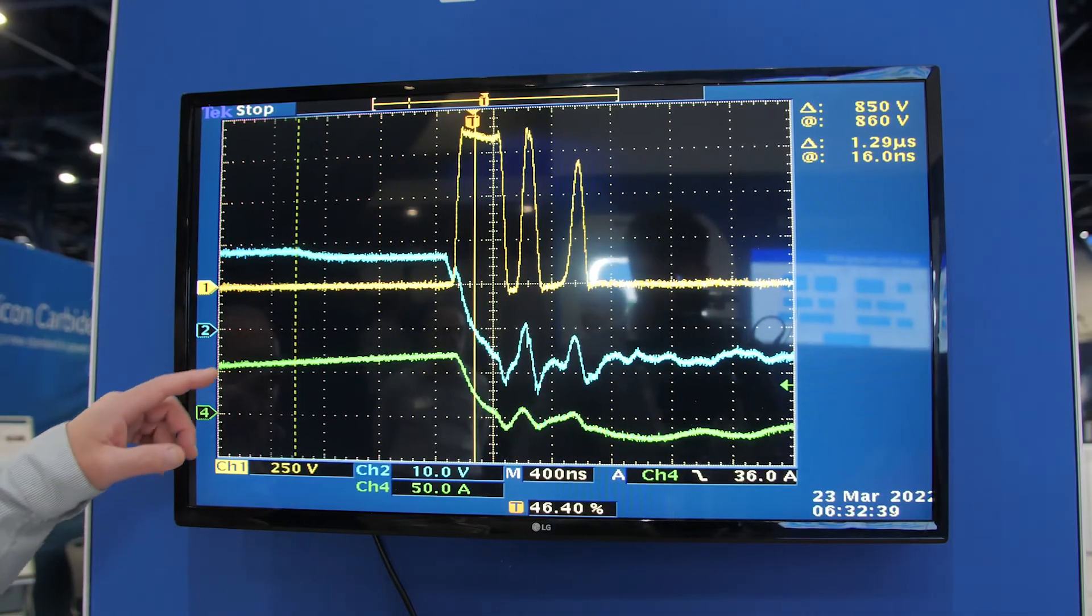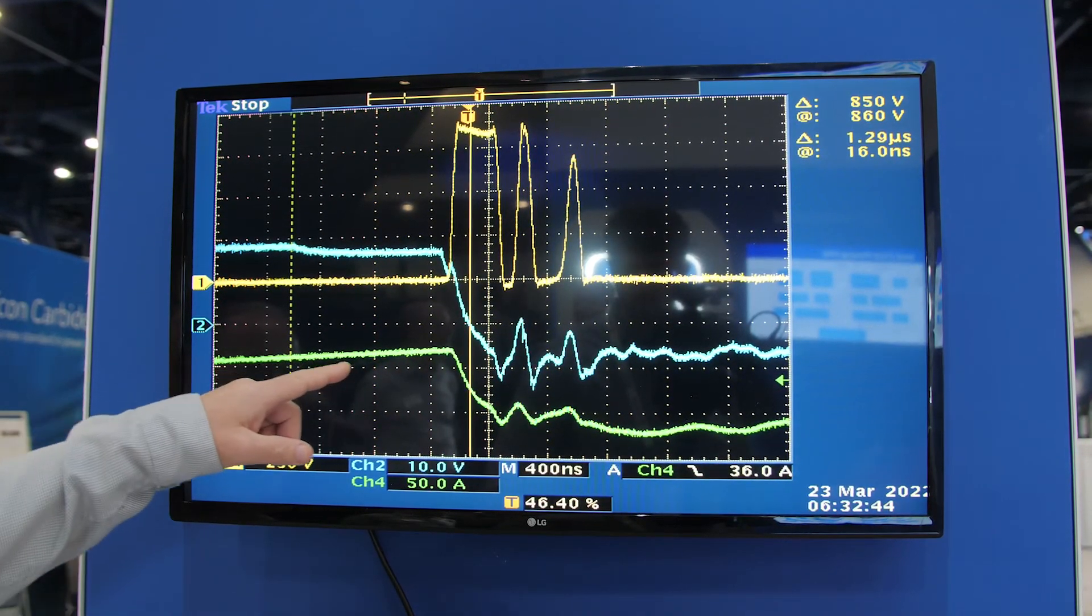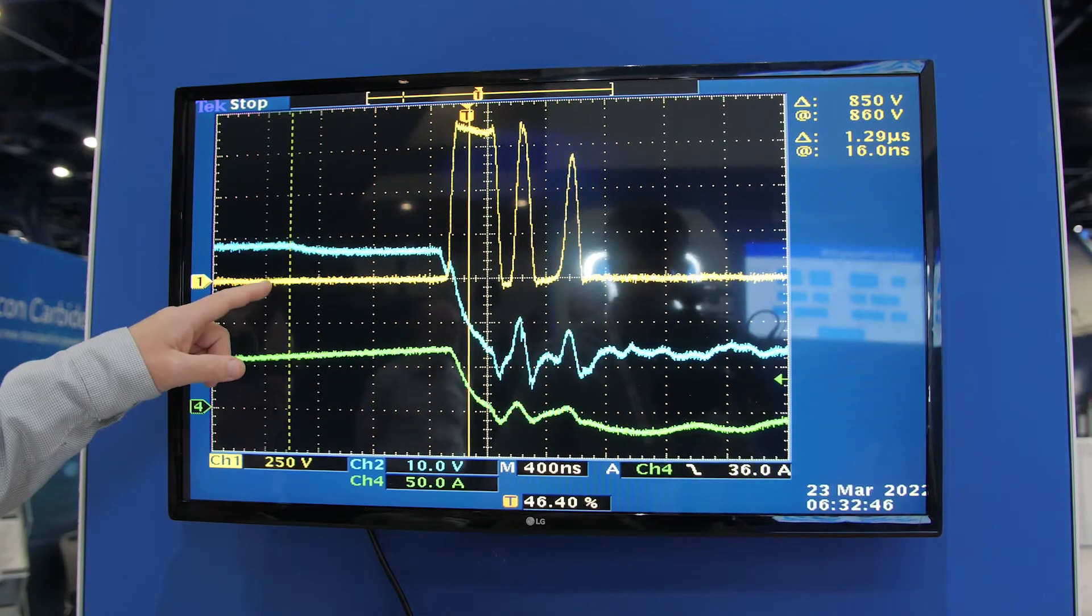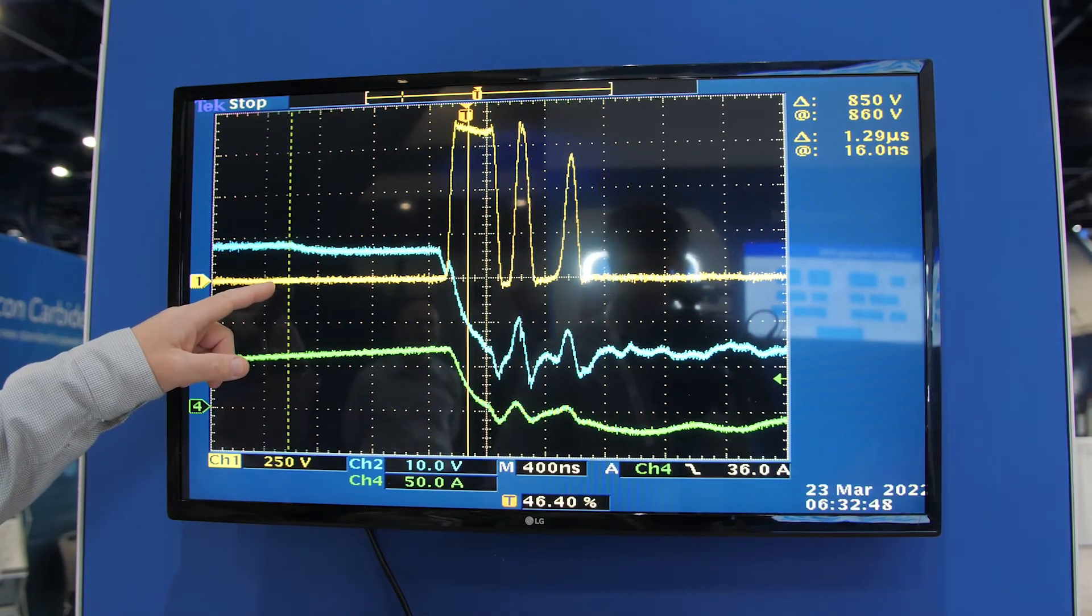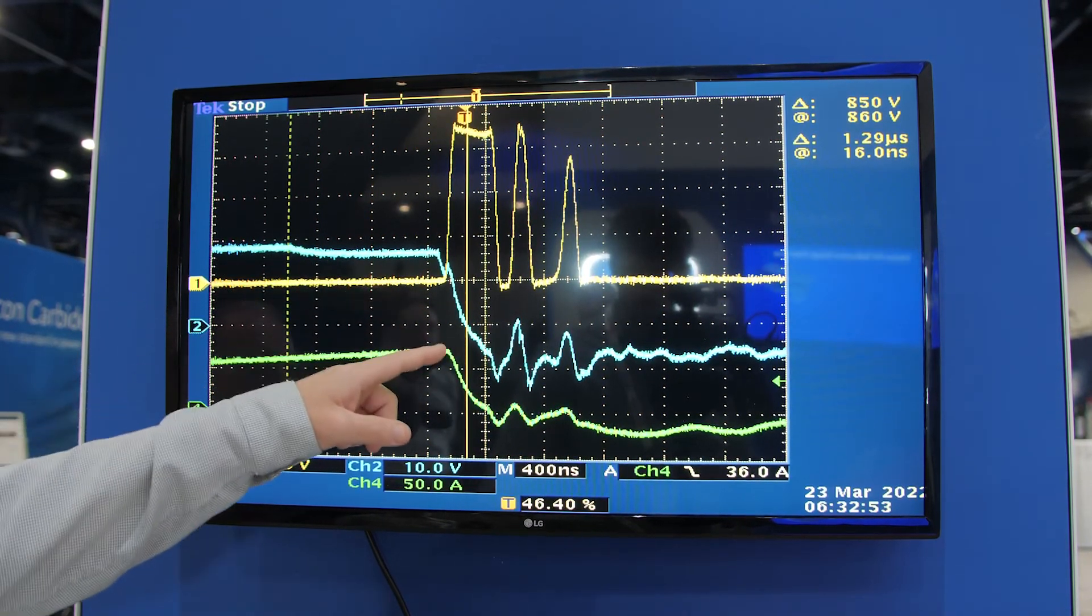So the three waveforms that you see on the screen here are the current in the system, so that's the peak current, the voltage across the drain to source of the MOSFET, and then the MOSFETs gate to source, gate drive voltage.